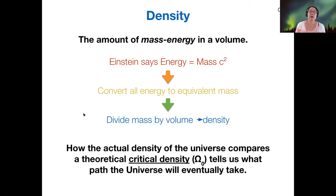And what we want to know is how the actual measured density of the universe compares to a theoretical critical density. This is big Greek letter Omega, capital Omega. So Omega naught tells us what the critical density is and how those two densities compare, actual versus critical, tells us which model, which pathway our universe will take.